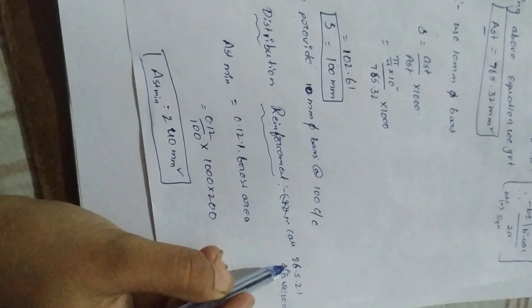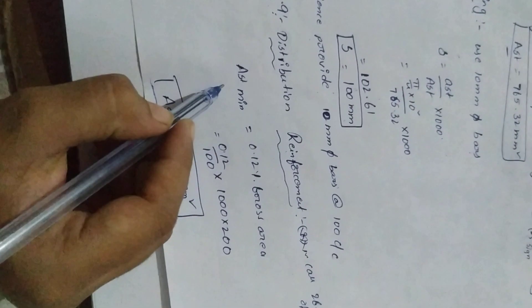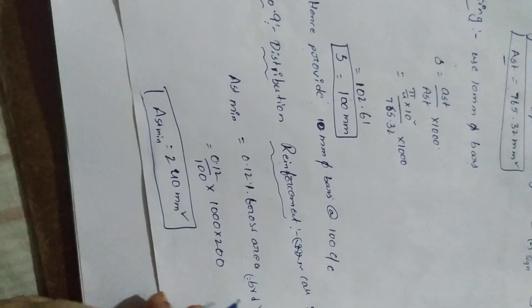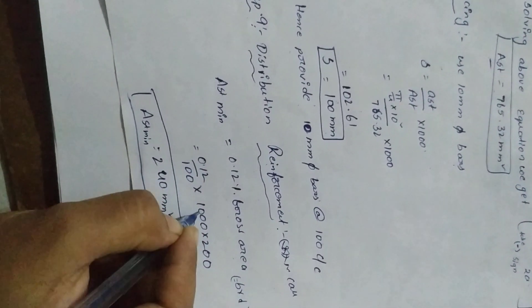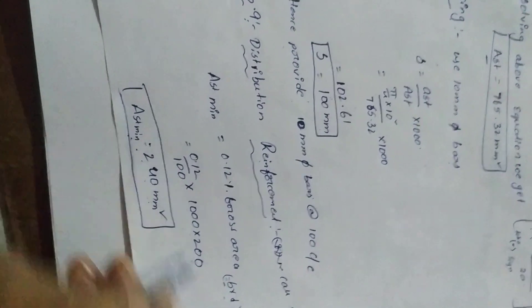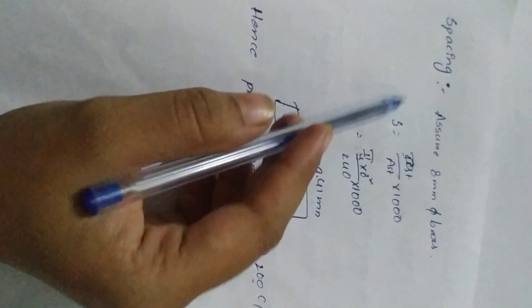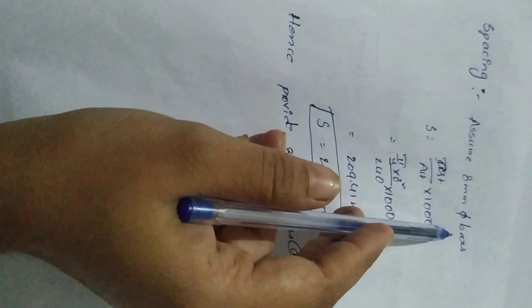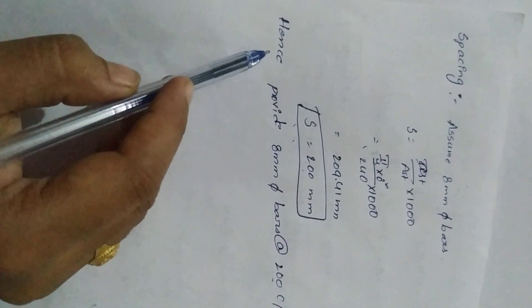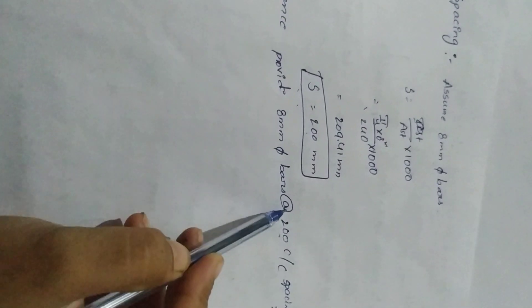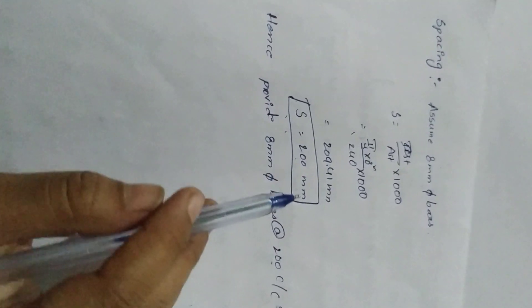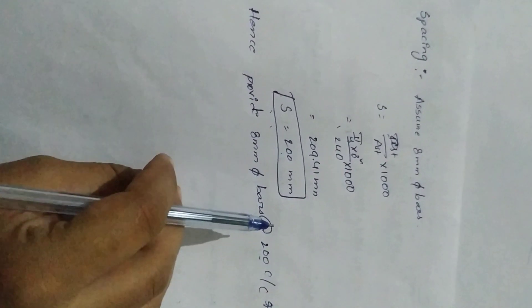Step 9: Distribution reinforcement, from IS 456:2000 clause 26.5.2.1. Minimum Ast equals 0.12% of gross area: (0.12/100) × b × D = (0.12/100) × 1000 × 200 = 240 mm². Using 8 mm diameter bars, spacing works out to 200 mm. Hence provide 8 mm diameter bars at 200 mm center-to-center as distribution bars. This completes the total design procedure of the staircase.